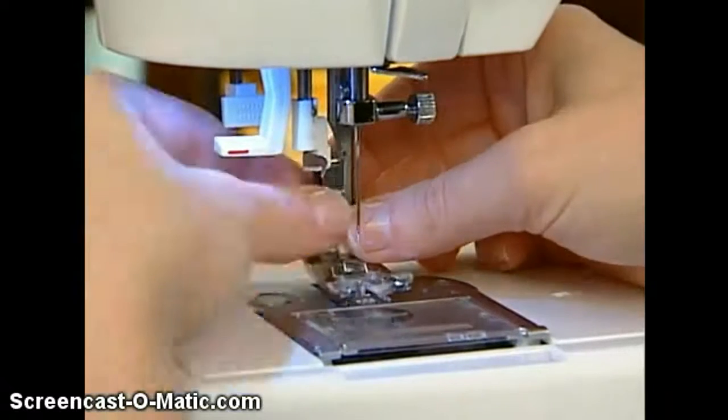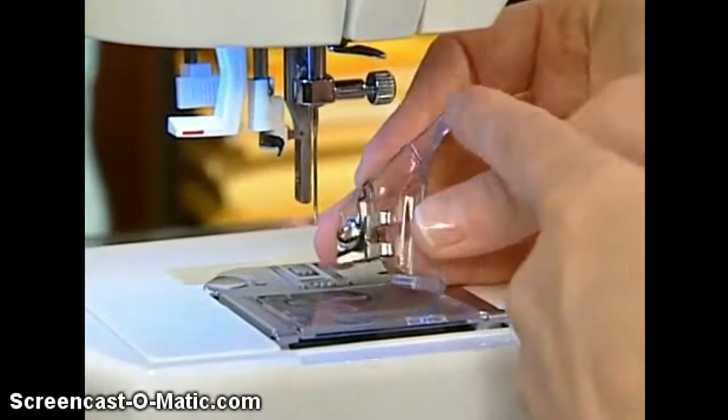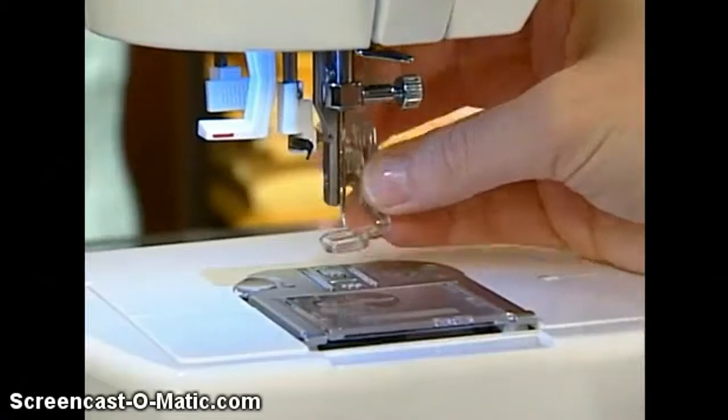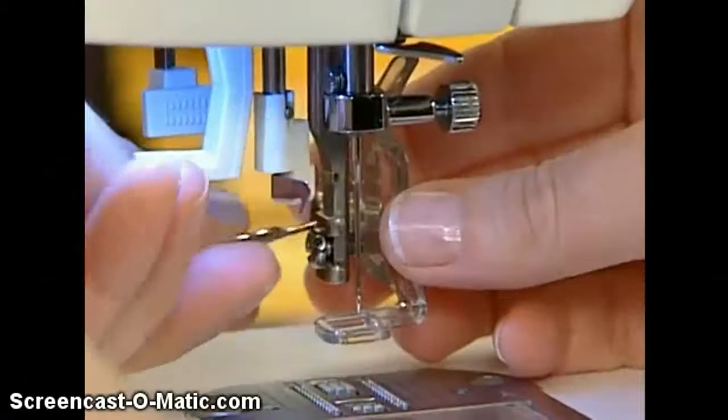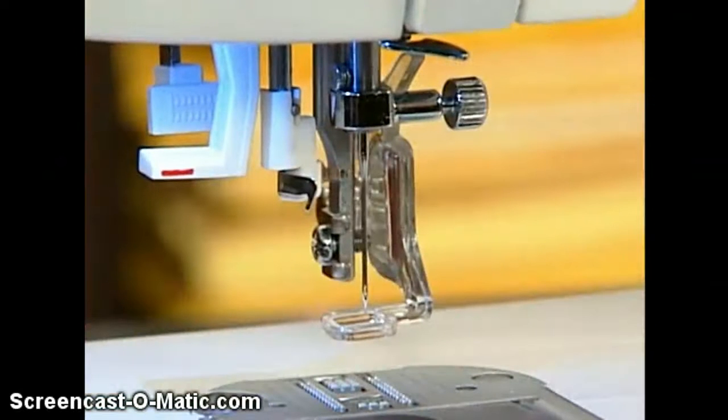Remove the regular presser foot and shank. Place the darning embroidery foot on the machine, making sure that the arm is resting over the needle bar. Tighten the side screw so that the foot is on the machine securely.